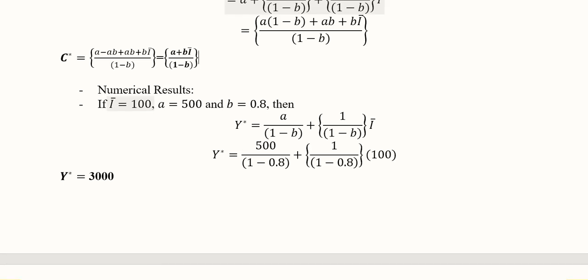The numerical results can also be had if we have some numerical values. Here we are assuming that I bar equals 100, and small a equals 500, and then b equals 0.8. So putting all these values we get this answer here which is Y asterisk equals 3000. So this is the equilibrium level of national income which is found by using the reduced form equation.